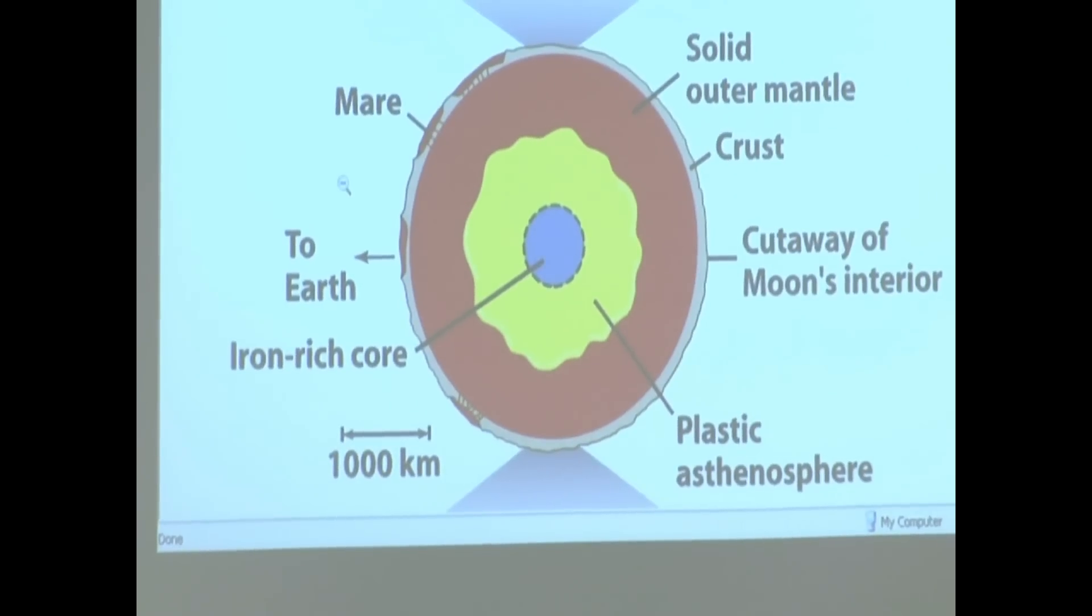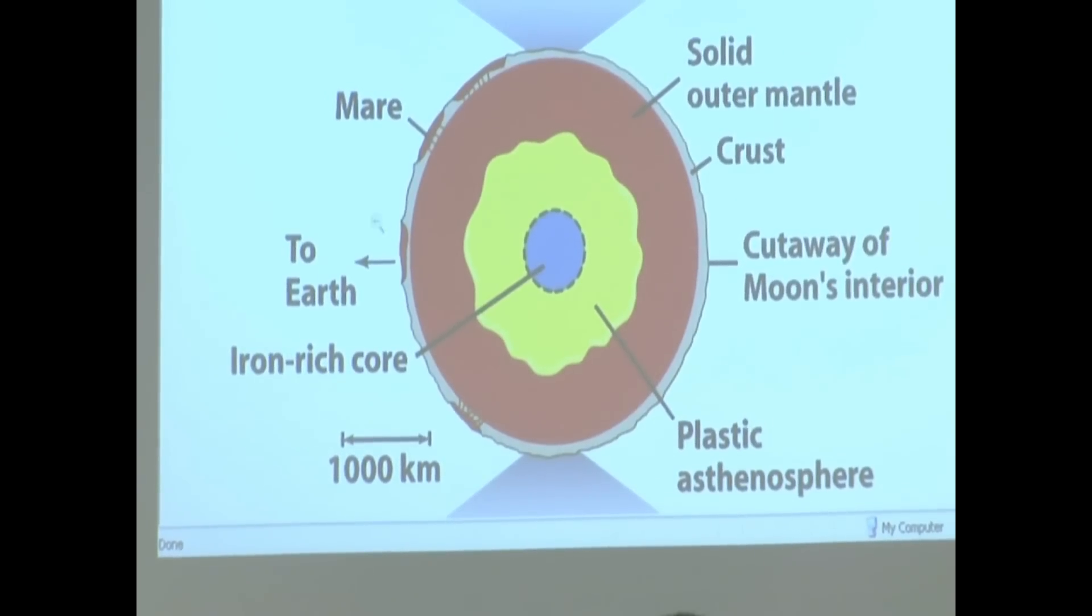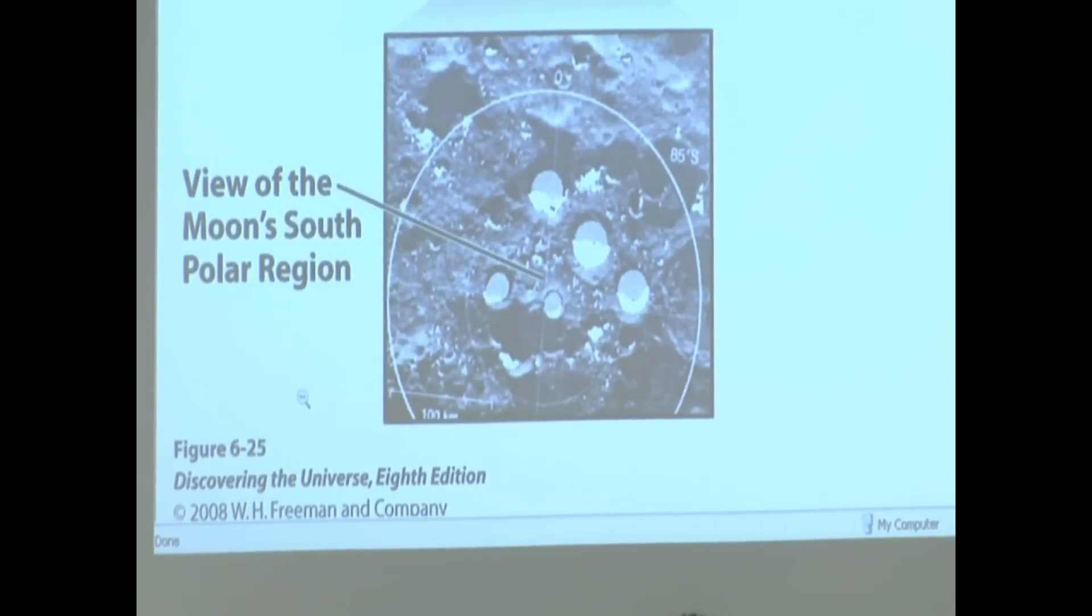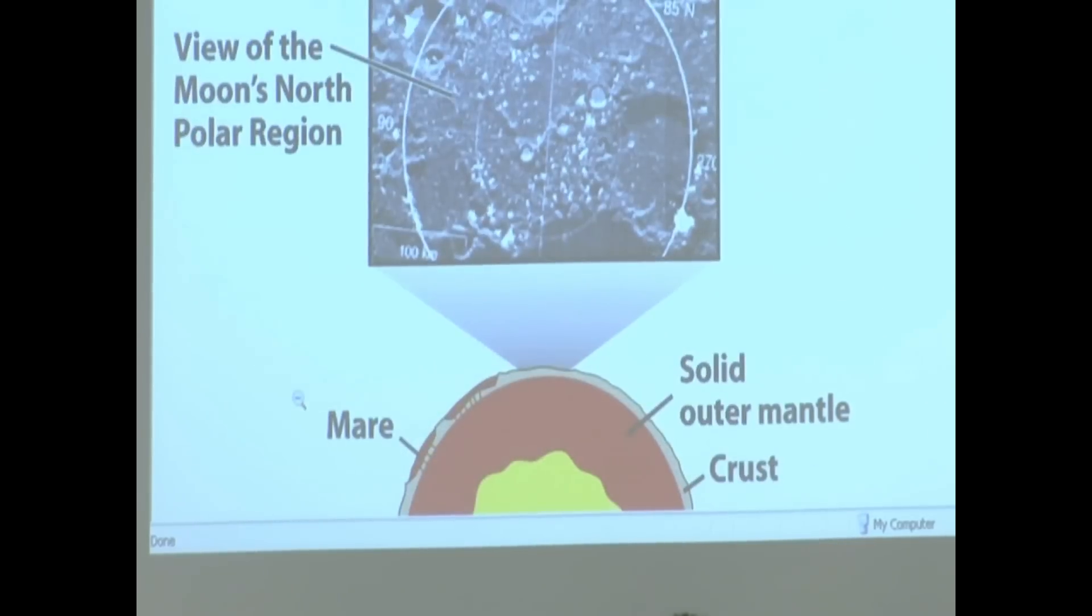And then here it says plastic asthenosphere, iron-rich core, you see, in the center. And then you've got the view of the moon's south polar region, and you've got views of the moon's north polar region.